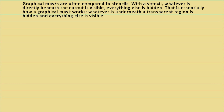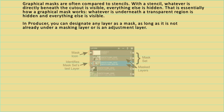Graphical masks have often been compared to stencils. In the case of a stencil, whatever is directly beneath the cutout region is visible and hidden everywhere else. In the case of a graphical mask, transparent regions hide what is directly beneath the mask, while the opaque regions make whatever is directly beneath it visible. In ProShow, a mask layer is identified by a small square icon that has a little white circle located in its center.